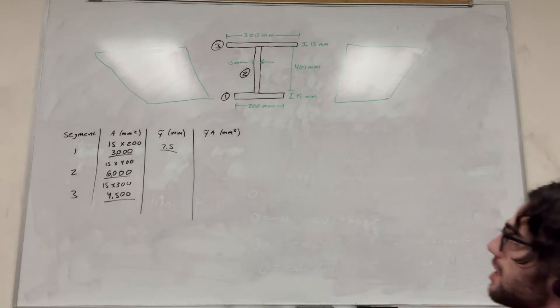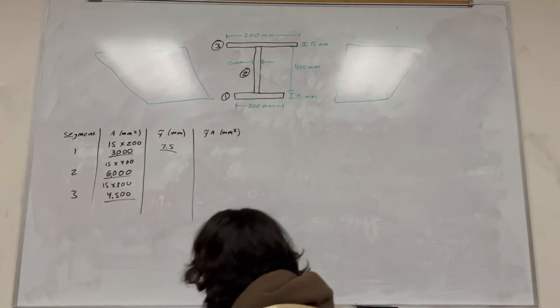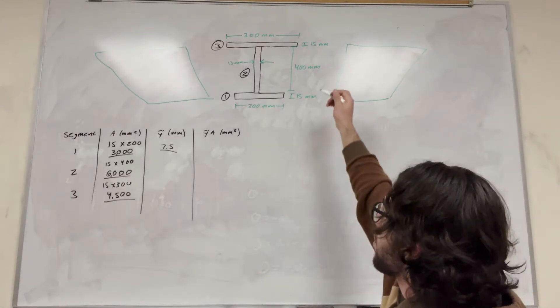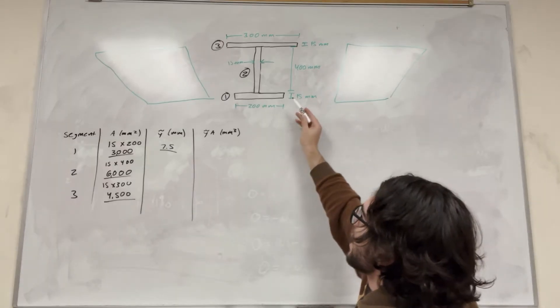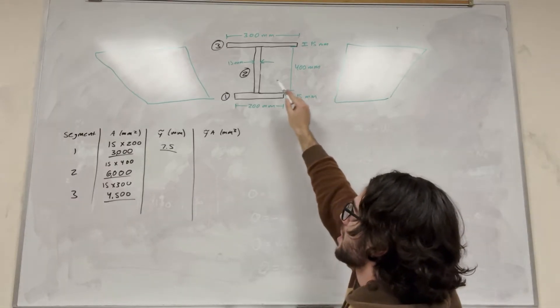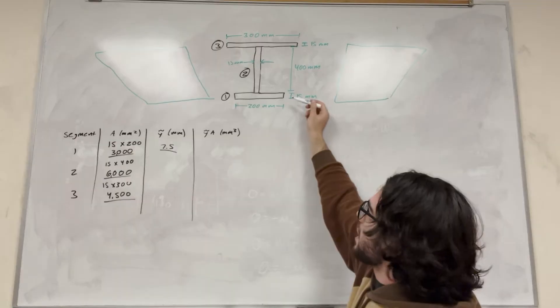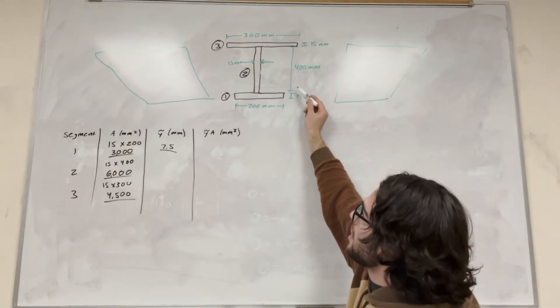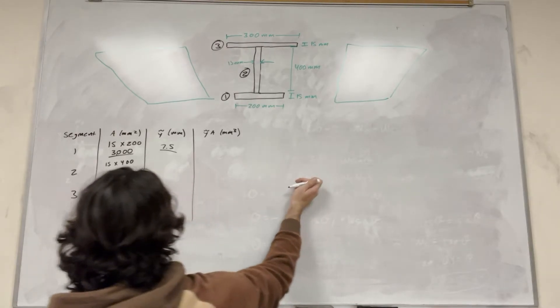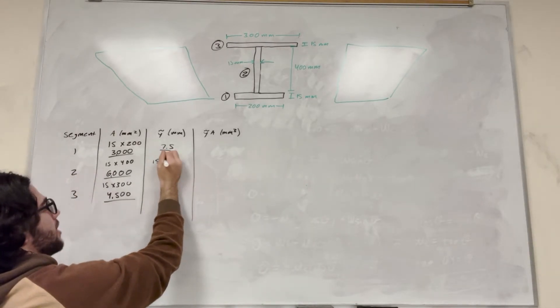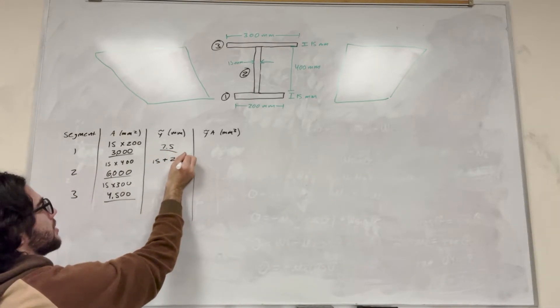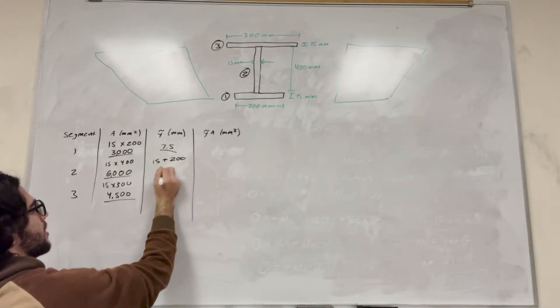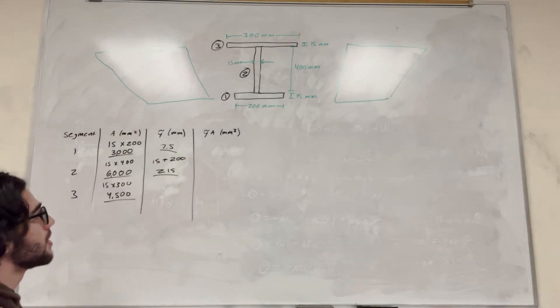Okay, so then we're looking at segment two. So segment two is off the ground. So we know that it's 400 tall. So it's easy to say that its center of mass is going to be 200 millimeters of its height. But we need to consider that this is zero. So we have to go up 15 first before we add that 200. So for this one, we're going to go, it's going to be 15 plus 200, which is 215. Nice.